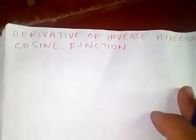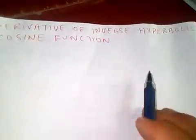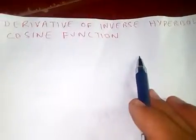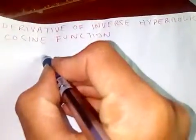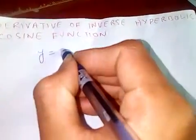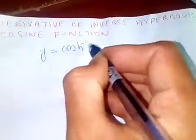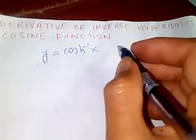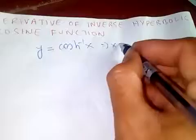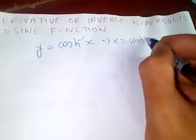Thanks for watching my video. Today I'm going to discuss the derivative of the inverse hyperbolic cosine function. First, let y equal cosh⁻¹(x). From this, we can express x as cosh(y).